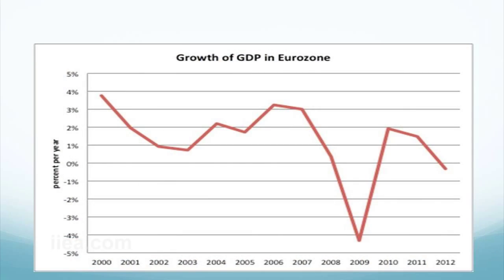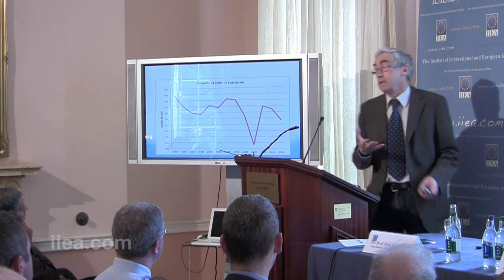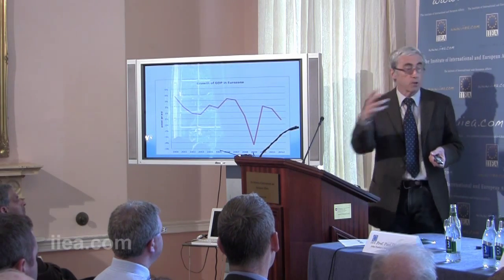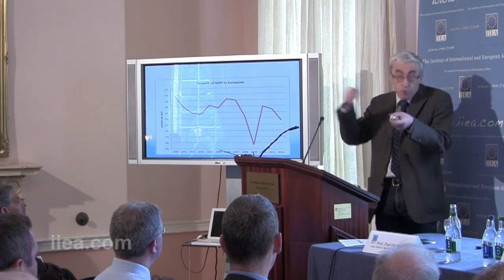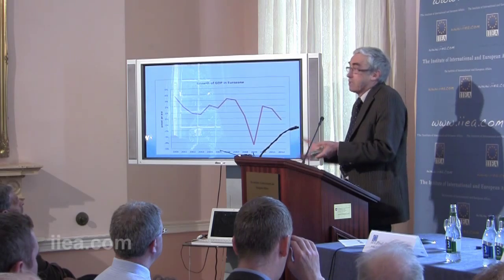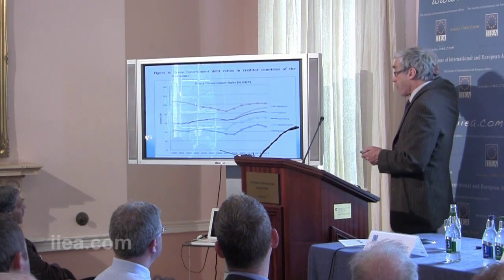We have an asymmetric adjustment system where the debtor countries are forced to do all the adjustments. There are imbalances — current account deficits of some and surpluses of others — and it is the deficit countries doing all the adjusting while the surplus countries do very little. That creates a deflationary bias, and in my view is the reason why we turned into a double-dip recession. The macroeconomic adjustment was asymmetric, and if only debtor countries reduce spending while creditors don't increase theirs, the whole system turns deflationary.